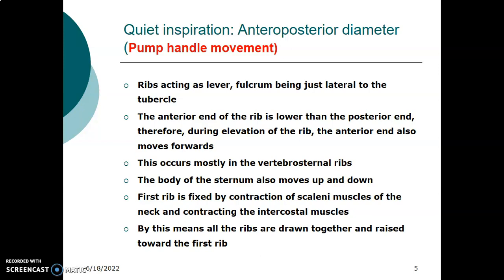The vertebrosternum ribs are usually lower on the anterior than on the posterior end. So when they elevate, they cause the sternum to move up and down. The first rib is fixed by contraction of the neck muscles and intercostal muscles. The ribs are drawn together and raised towards the first rib. The first rib is fixed by the scalenus muscles and contracting intercostal muscles, and the other vertebrosternum ribs are raised towards it. The movement of the sternum upwards and outwards increases the anterior posterior diameter of the thoracic cage, while moving downwards and inwards reduces it.